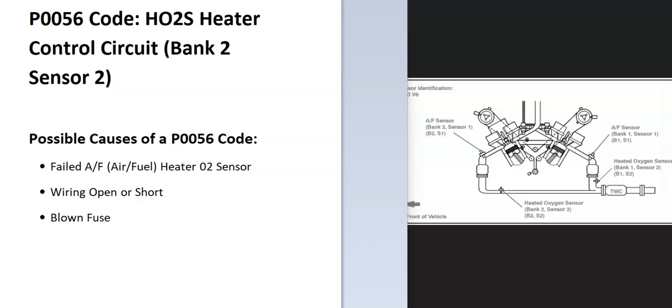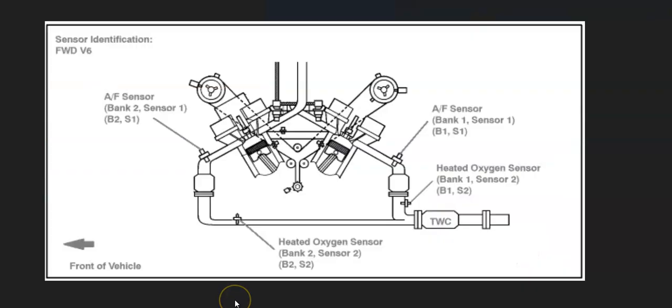The first thing to do when you get this code is to go locate the bank 2 sensor 2 oxygen sensor. There can be some differences depending on the vehicle, the year, the engine type, things like this. So it's always a good idea to go get a diagram for where all the sensors are located and how they're laid out. It just makes it easier.